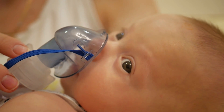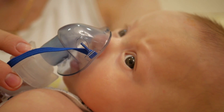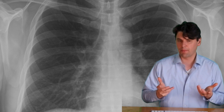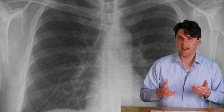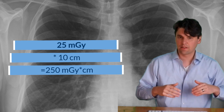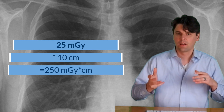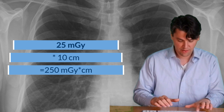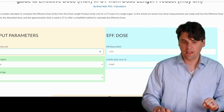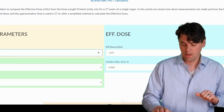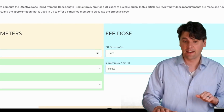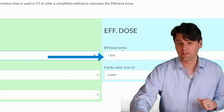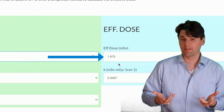If a one-year-old comes in for a CT scan, the radiation dose that would be used would typically be lower — maybe 25 milligray would be representative — and the distance that would be scanned would be less, so maybe 10 centimeters. So if we say 250 milligray centimeters is what the scanner would output, you can see if we select a one-year-old and a head, the effective dose is still below two millisieverts.